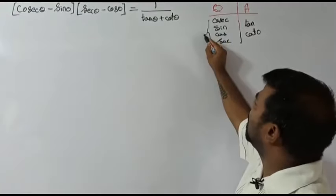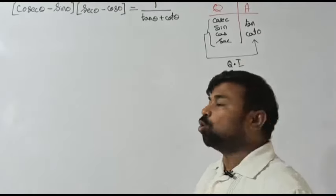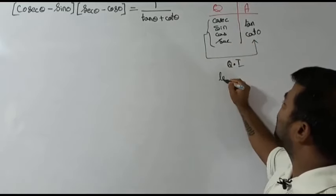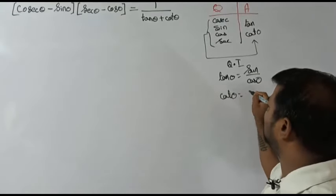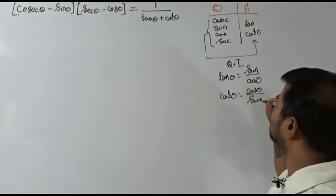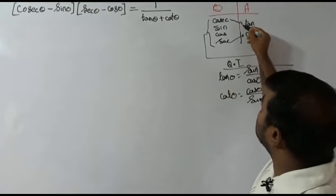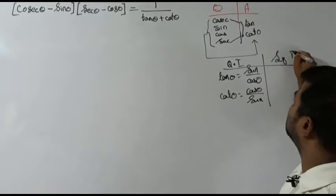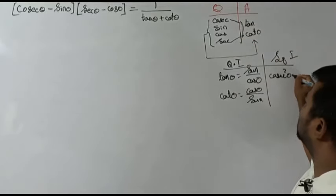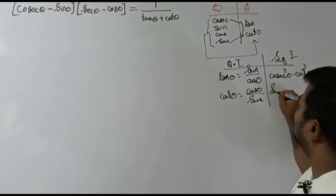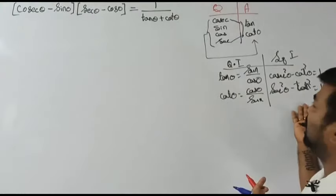All the terms present in the question are related with the help of quotient identities. Remember: the quotient identity for tan θ is sine θ divided by cos θ, and cot θ is cos θ divided by sine θ. Now, the square identities: cosec²θ minus cot²θ equals 1, and sec²θ minus tan²θ equals 1.